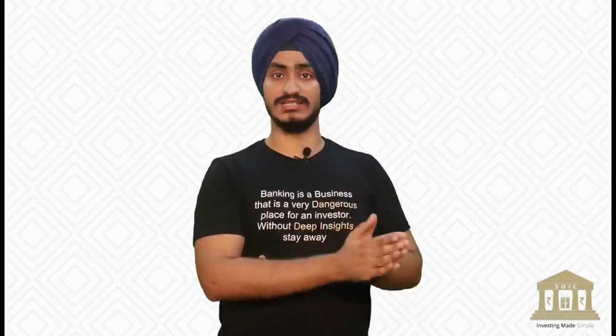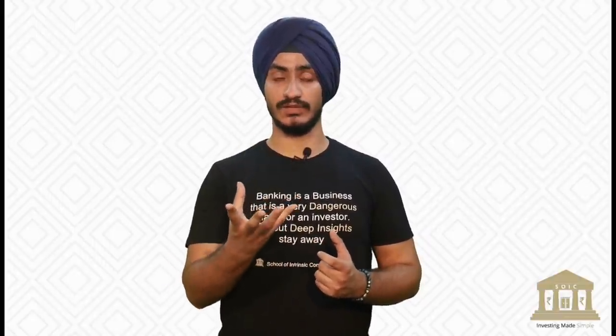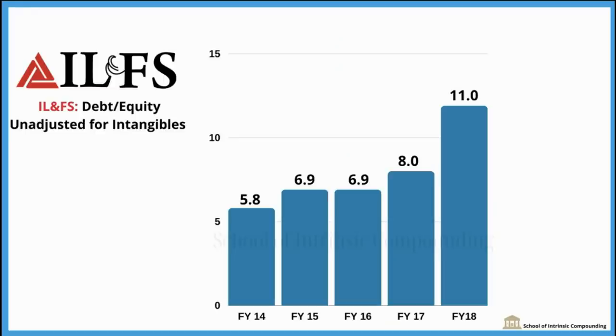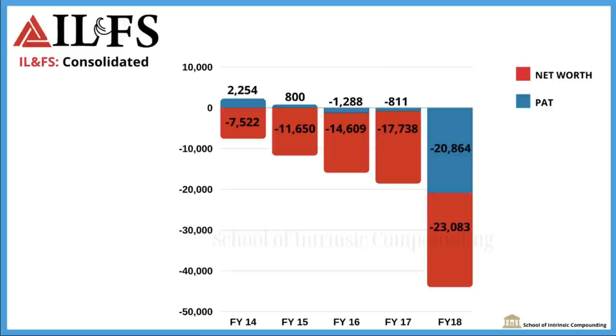Here we study 3-4 banks and 3-4 NBFCs as case studies to see how they commit these sins. Coming to the example of IndusInd Bank. In 2018, IndusInd Bank gave a liquidity loan to IL&FS, three months before the rights issue. This loan amount was close to 3,000 crores. Moreover, this was an unsecured loan. At that time, if we look at the debt-to-equity ratio, it was rising since the last 4 years — in 2014 it was 5.8, in 2015 it was 6.9, and in 2018 it was 11.9. If we look at the net worth and profit after tax of IL&FS in 2018, the net worth of the company was a negative 23,000 crores, and profit after tax was a negative 20,000 crores.